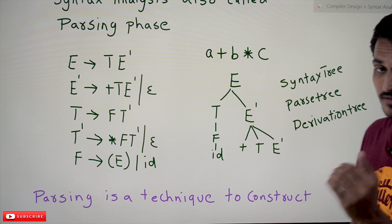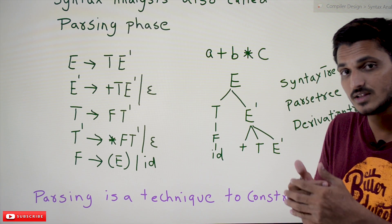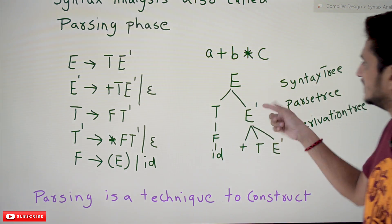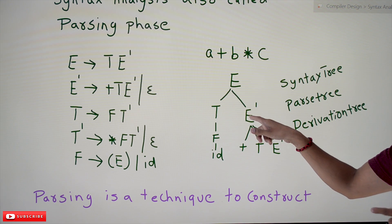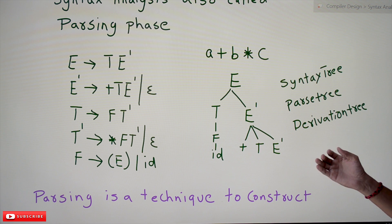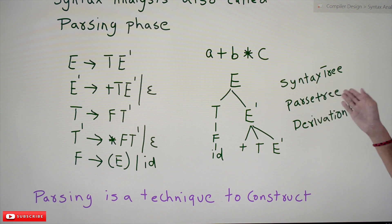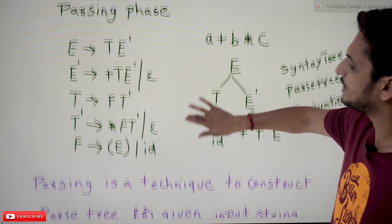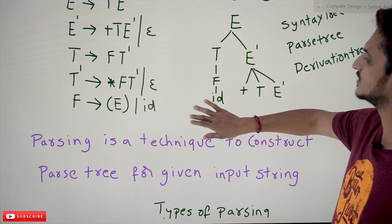So the output generated in the parsing phase is this tree. This we call it as syntax tree, or we can call it as parse tree, or we can call it as derivation tree. That's why it got the name parsing. The output generated in the syntax analysis phase is a syntax tree, parse tree, or derivation tree. That's why we call the name as parsing also, or parse phase also.